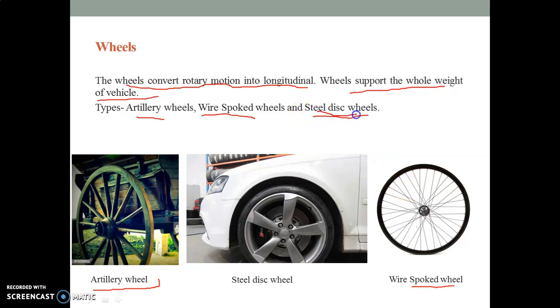Next is steel disc wheels. This is the steel disc wheels. These are in common use with the modern vehicles. These wheels consist of rim and ring or steel disc, tires, tube, flap and tube valves.